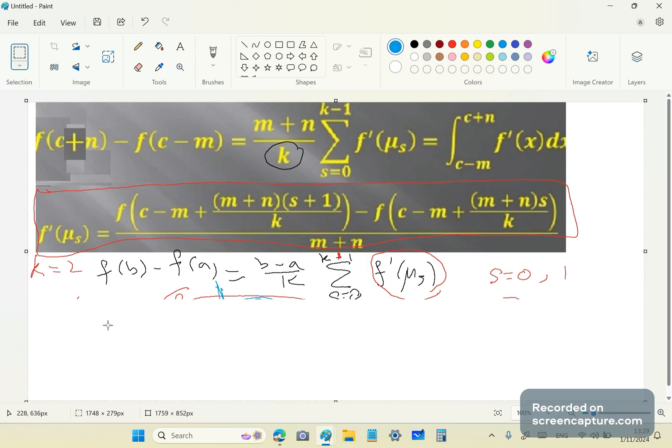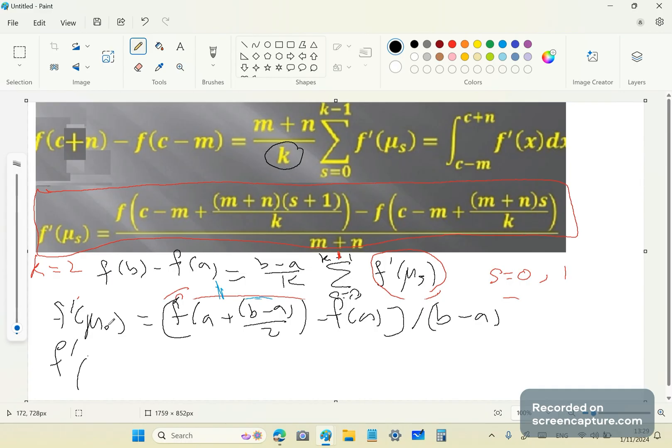This is a bit messy. Try to get it right this time. Let's use black ink. Let's do F mu 0 this time. F prime mu 0 is equal to F of A plus B minus A over 2 minus F of A, and that's all over B minus A. And F prime mu 1 is going to be F of A plus 2 B minus A over 2 minus F of A plus B minus A over 2, all over B minus A.